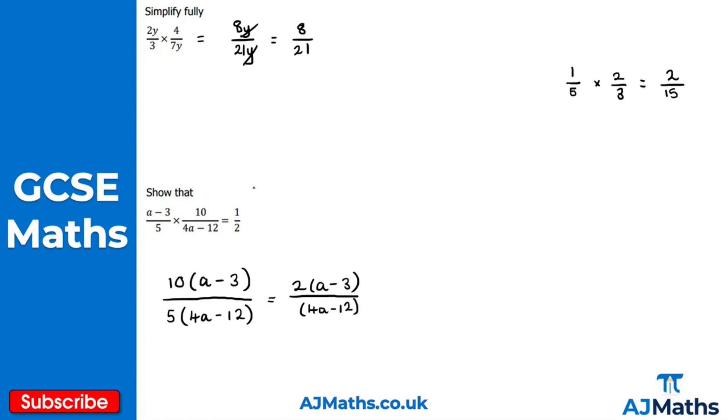We're still not at 1/2 yet, so what next? Let's factorize 4a-12. We can factor out a 4, giving us 4(a-3).